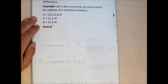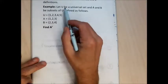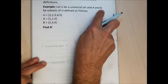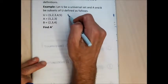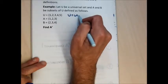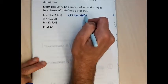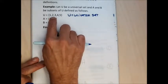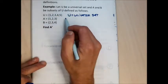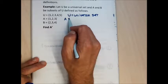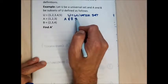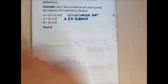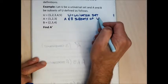Let me do some examples to help you understand what these terms mean. The first term we talked about was a universal set. For this example, I created a universal set and two subsets — set A and set B — and I just randomly made them up. Set U is called the universal set for this particular example, so the only numbers I'm going to consider are 1, 2, 3, 4, and 5. Sets A and B are proper subsets of this universal set.